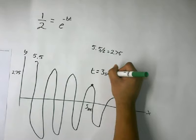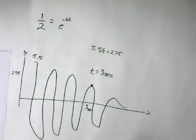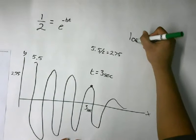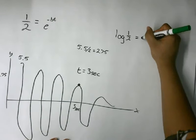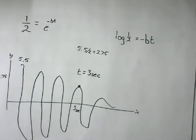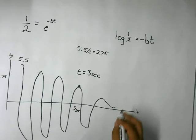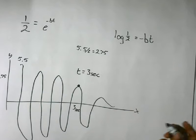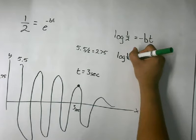So looking back at our original equation right here, 1 half equals e to the negative bt. What we can now do is take the log of both sides. So log 1 half is equal to negative bt, since the log of e cancels out and becomes 1. So now all you have is b and t. So you can divide through by t, your decay constant by negative t, and you'll end up with just b.